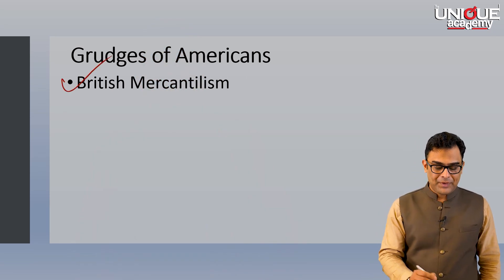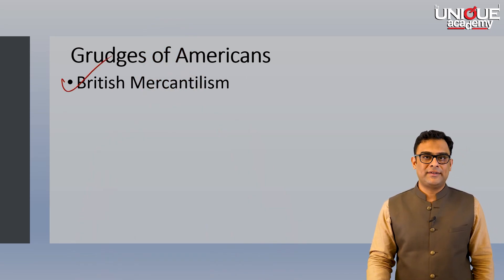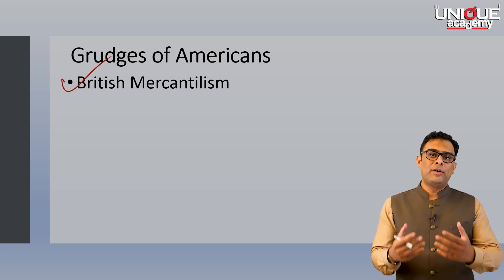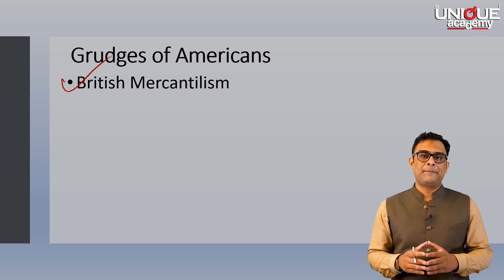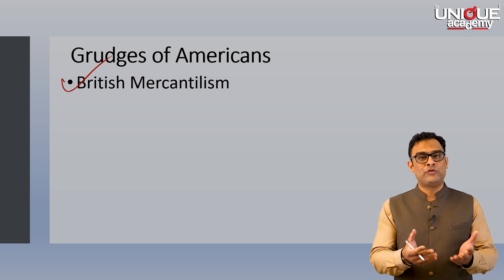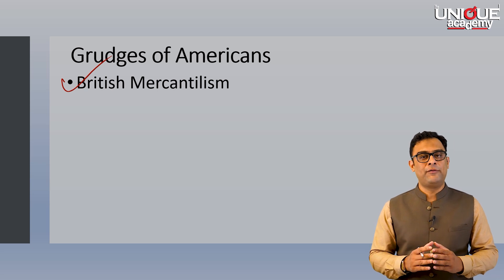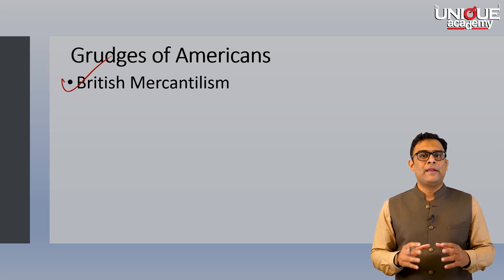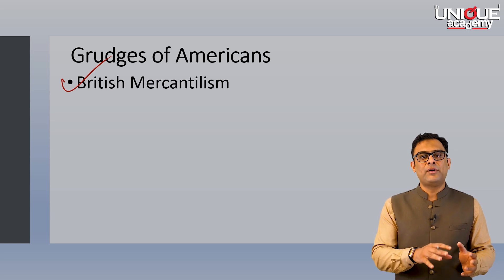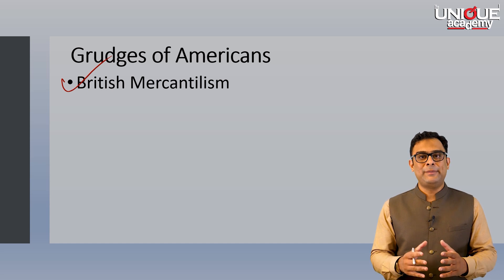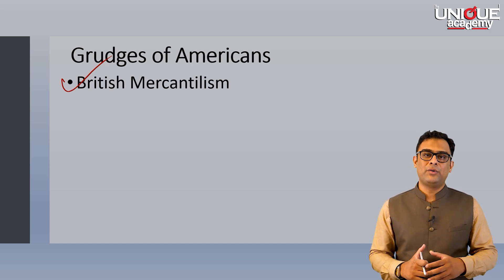Amongst the grudges of Americans, the first one was British mercantilism. This philosophy meant that British trade had to be prioritized by the colonies. Colonies were created in the first place to serve as sources of raw material and outlets for the finished goods of the metropole. This naturally subjugated the economies of the colonies to Britain's economy, which was seen as unjust by the American colonists.